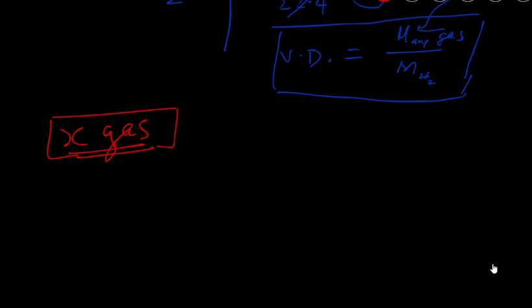Say you find the gas is very unreactive, meaning it could be nitrogen or one of the noble gases. How do you narrow it down? One way is to determine the molar mass, and then by process of elimination figure out whether it's an already known gas or a new gas.